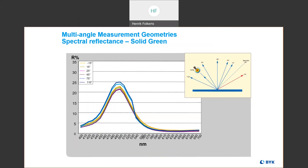Here we have an example of a multi-angle color measurement done with our BIC-MAC multi-angle spectrophotometer. We can see six spectral curves — the spectral reflectance data obtained at each of the six measurement angles. For this solid green color, the curves are pretty much right on top of each other, indicating the color at each angle is going to be pretty much the same. Solid colors can typically be measured at just one angle to get an accurate color measurement.